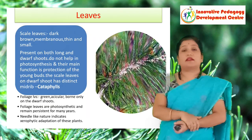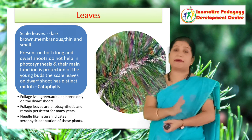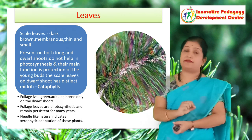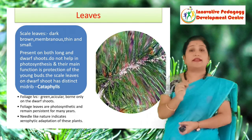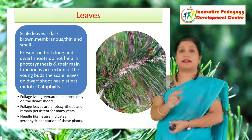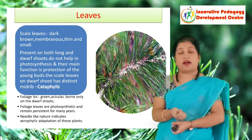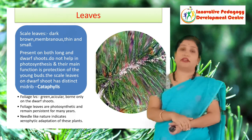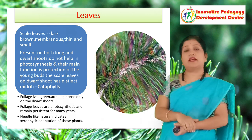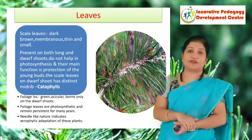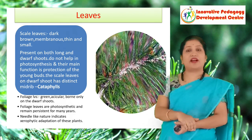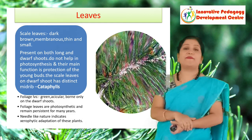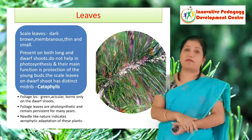Now let us know about the leaves. There are two types of leaves: the scaly leaves and the foliage leaves. The scaly leaves are present on both the long shoots and the dwarf shoots. They are thin, membranous, and dark brown in color, and they are not involved in the process of photosynthesis. They are involved in the protection of the young buds.